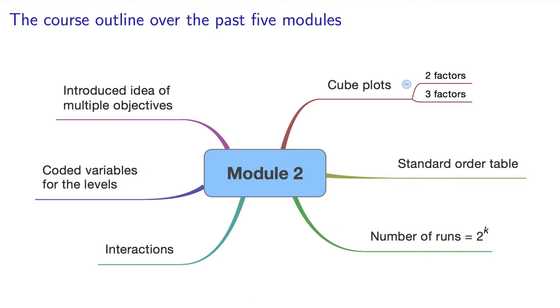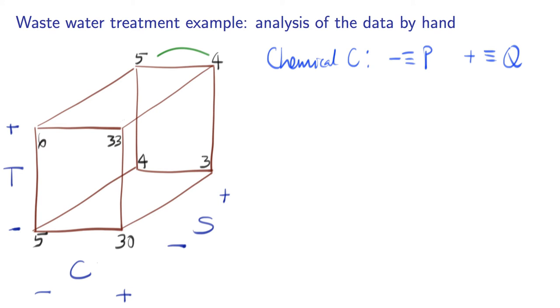We learned how to set up our standard order table to assist us. There are 2 to the k experiments in a full factorial. And once that full factorial is run, we saw how to manually create a simple prediction model. Remember that high minus low, high minus low idea? No software was required.